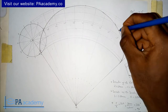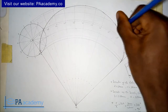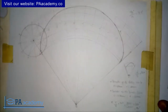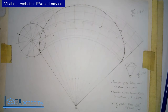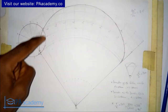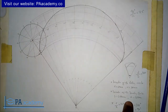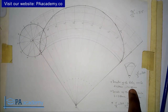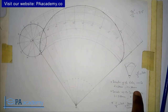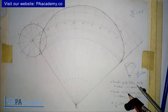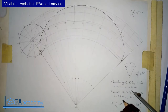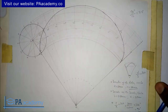Now that I know this is where I want my tangent to be, the next thing I'm going to do is bring in my compass and measure the radius of the rolling circle. The radius of this rolling circle is 30 mm, as we used when drawing the epicycloid.